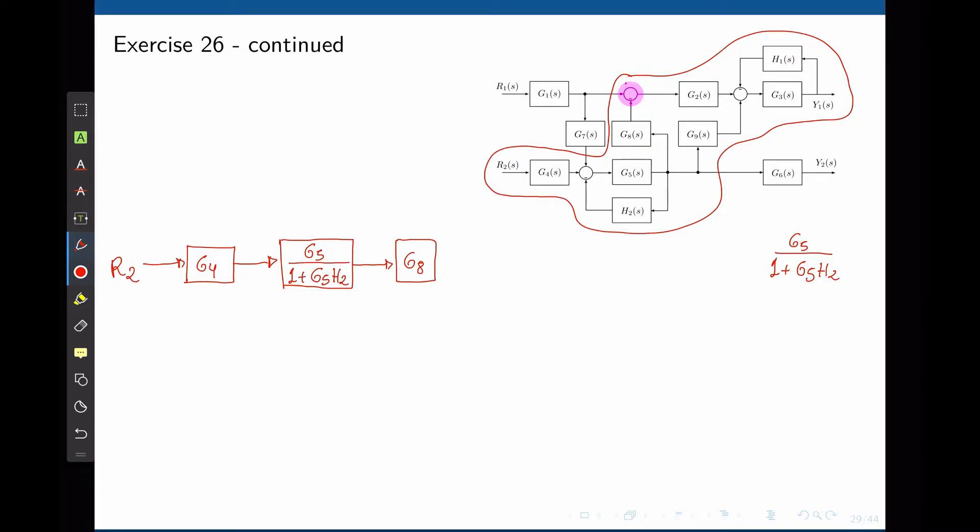You see now that everything that comes from R1 is 0. So that sum cannot be neglected simply because there is a negative sign. So the signal that comes out of G8 is multiplied by negative 1, again because of that negative sign in the sum, and that goes to G2.